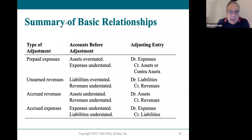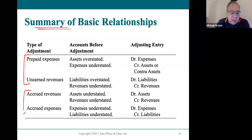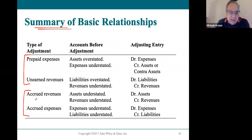Here is a summary of everything we have learned. These are the deferrals — four of them: three prepaid expenses (supplies, prepaid insurance, and equipment), and one unearned revenue. Then we have three accruals: one accrued revenue transaction, and two accrued expenses — one for interest and one for salaries and wages. These are the seven adjustments you have to know for this particular chapter.